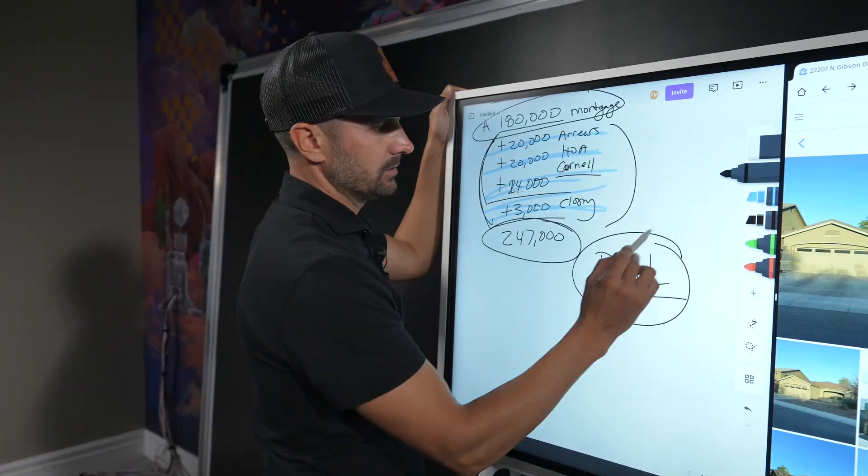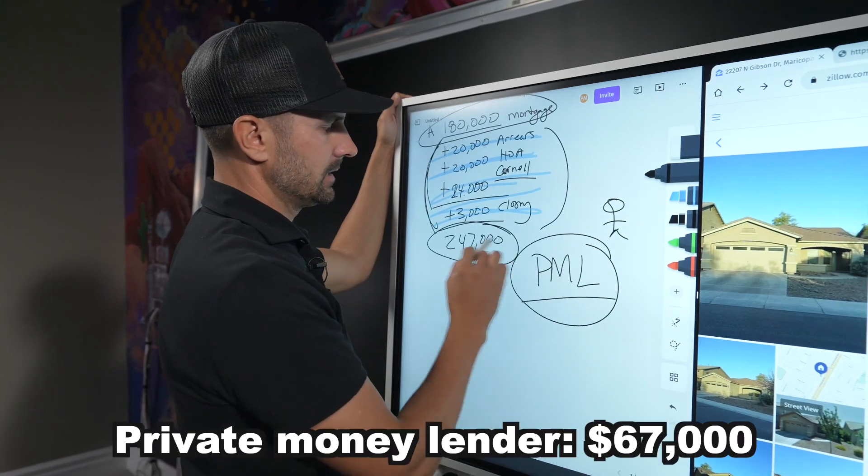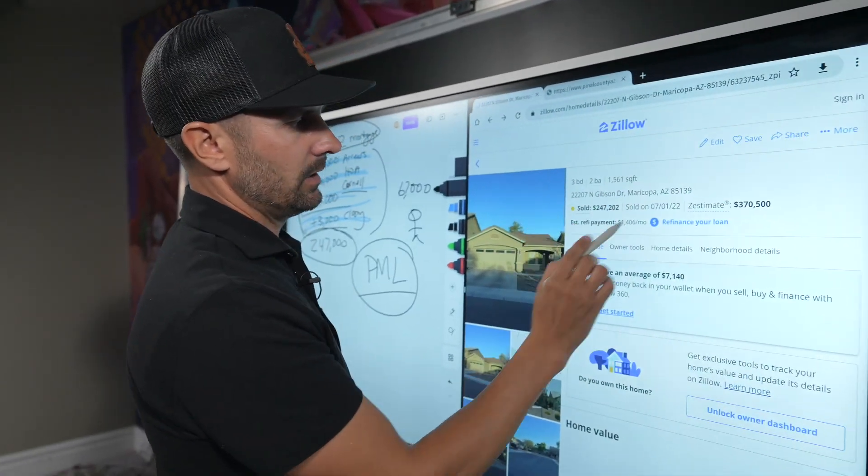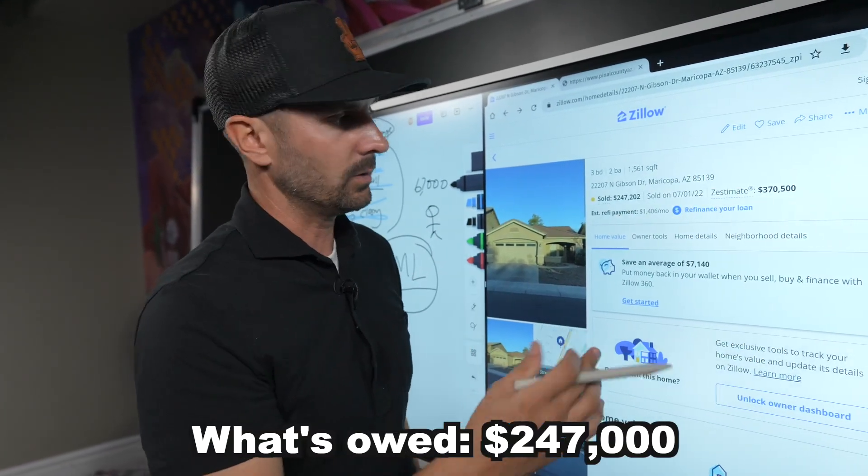I got a private money lender, just an individual that gave us the $67,000 to catch all that up. As you can see, this property, what's owed is $247k. That's what I bought it for.